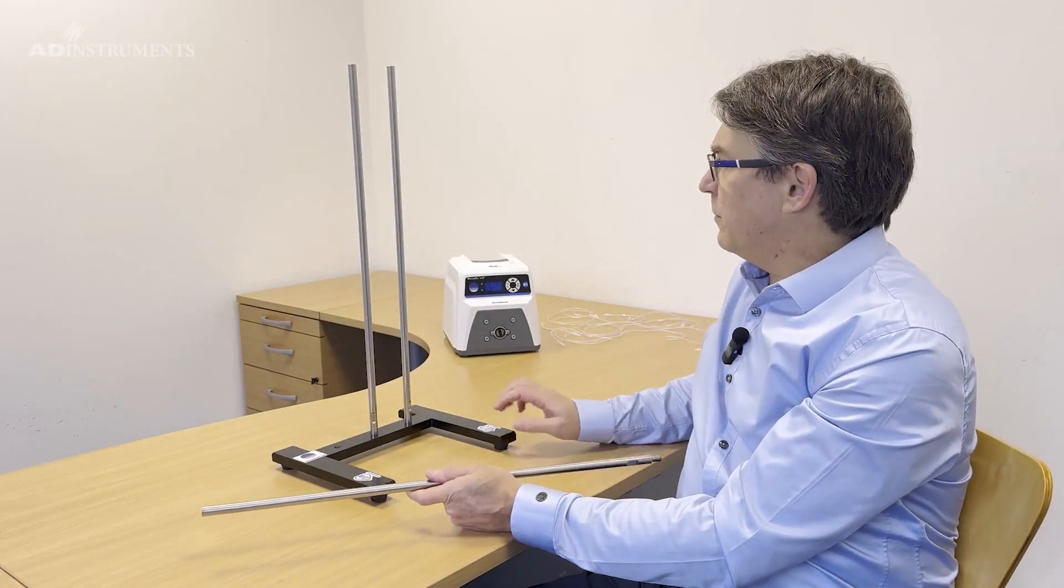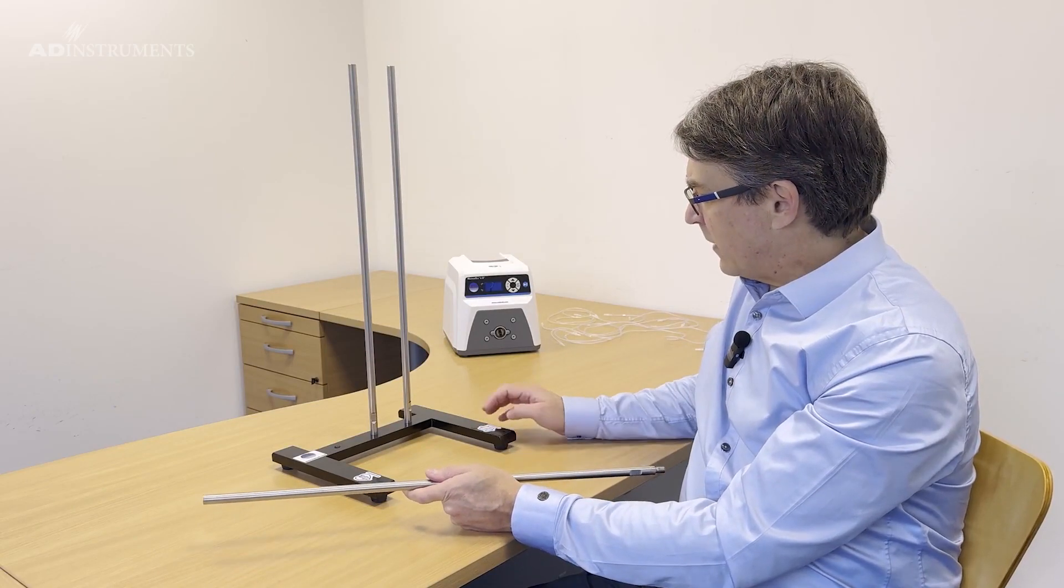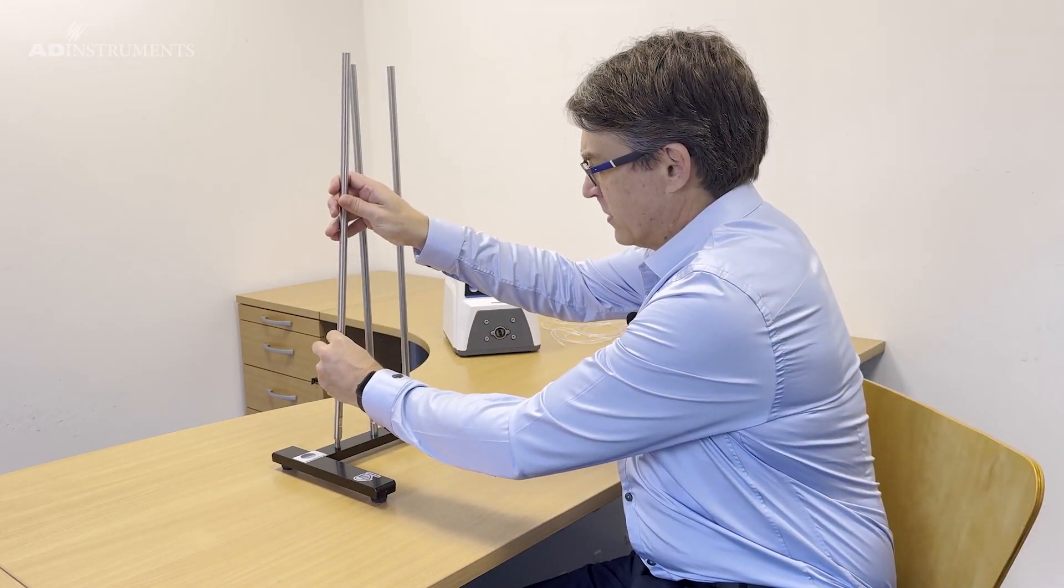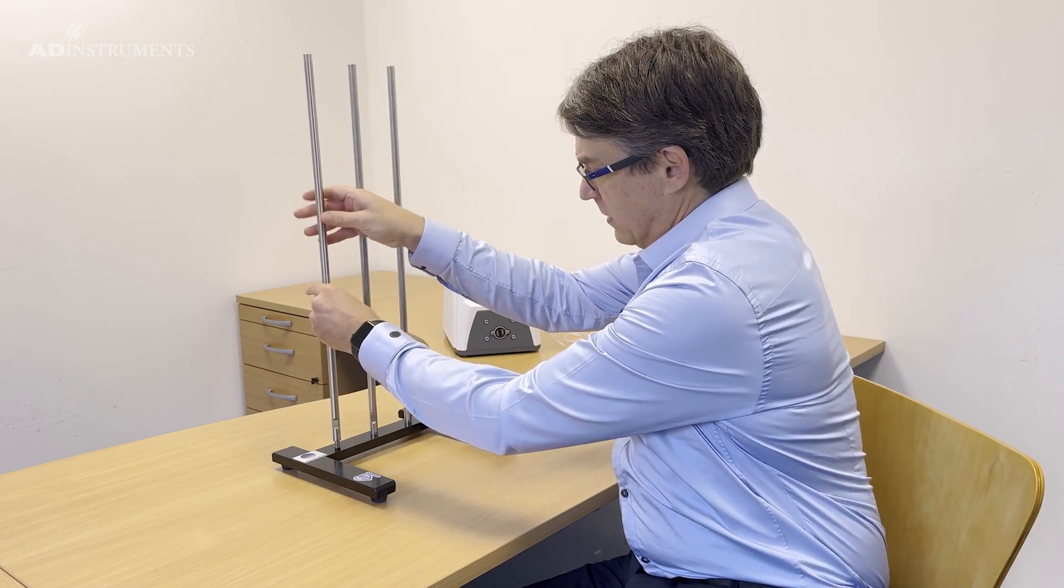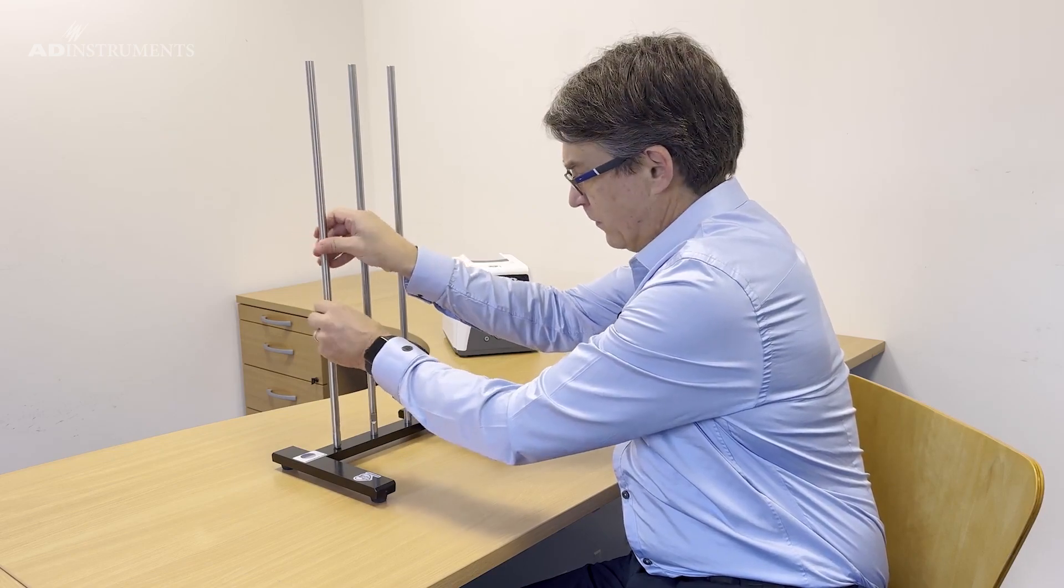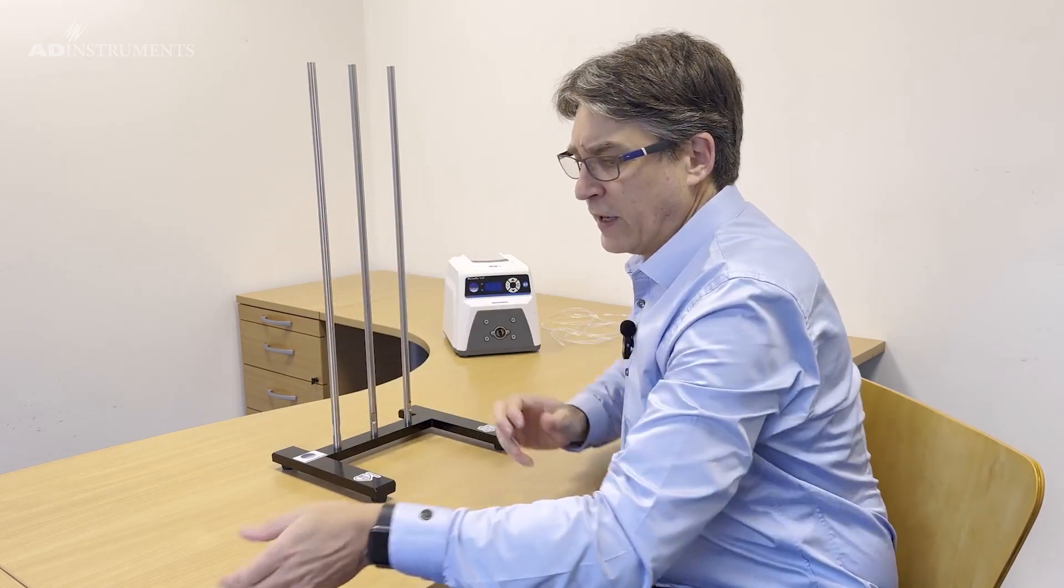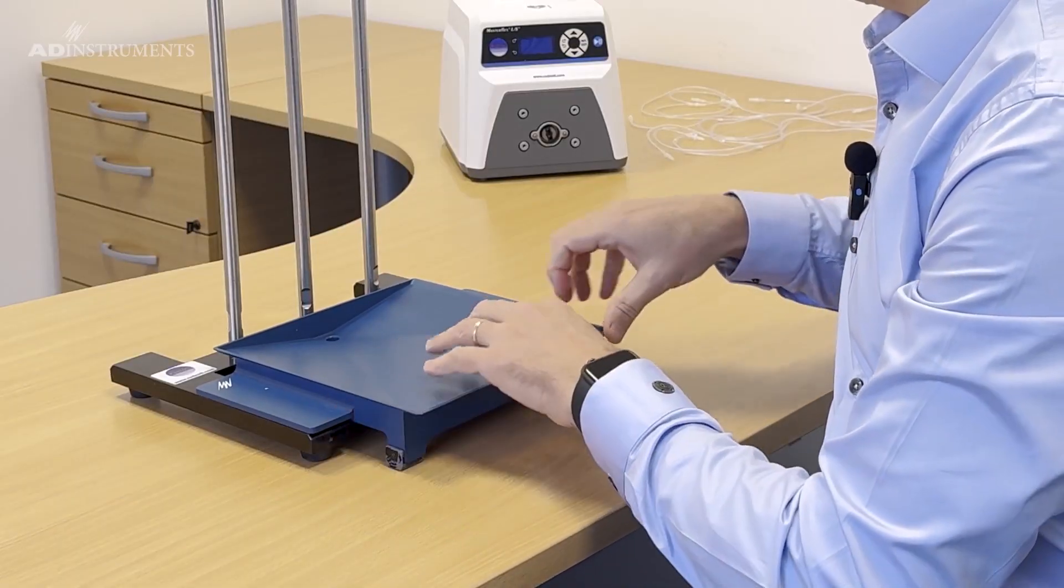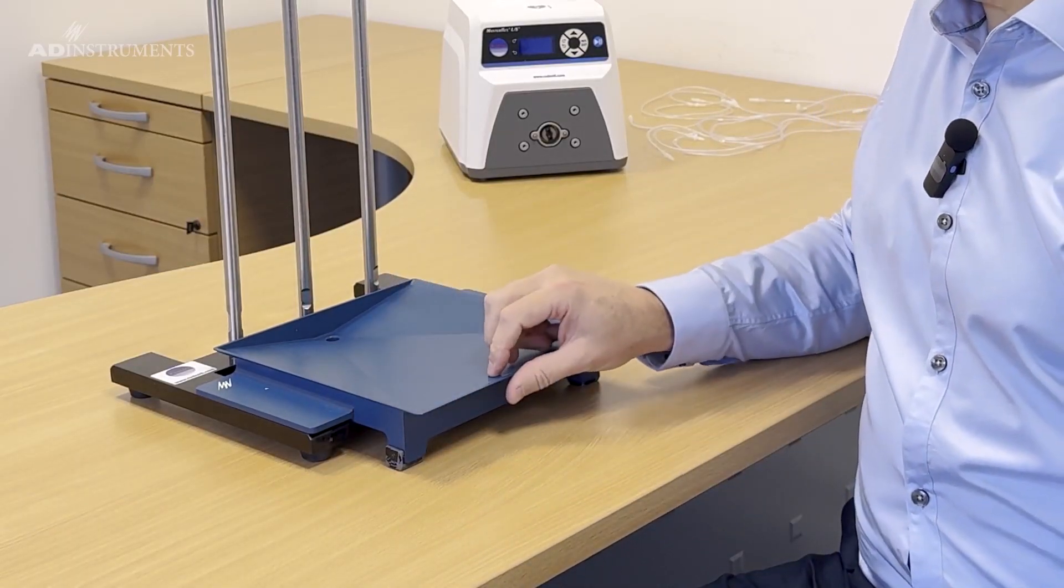We'll start off with the main stand which consists of a stainless steel base and these stainless steel support rods. The support rods screw into the base like so and the system also consists of a handy spill tray for overflowing perfusate which you can then run off to the drain.